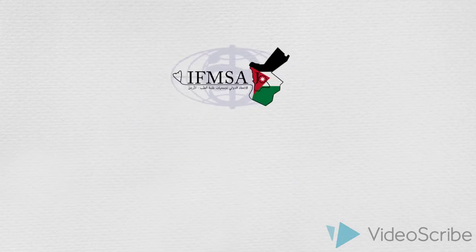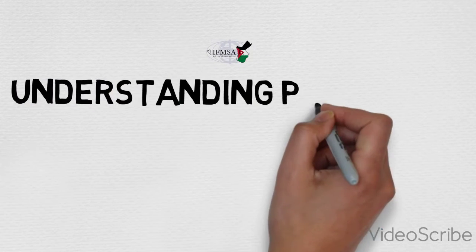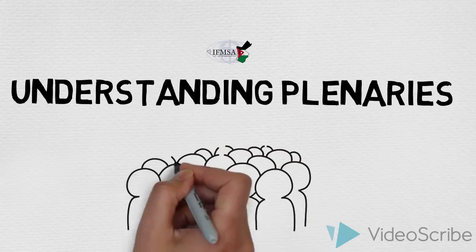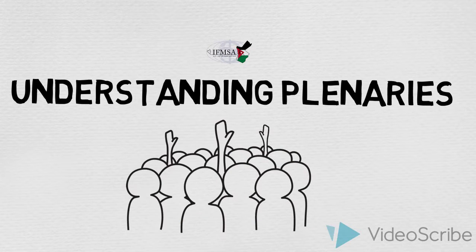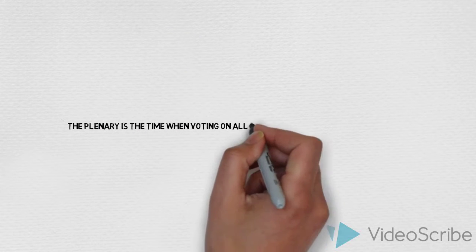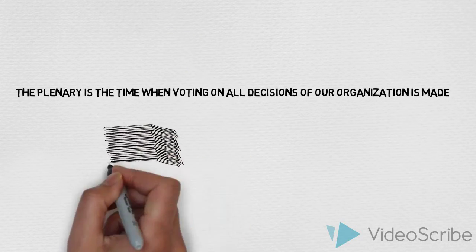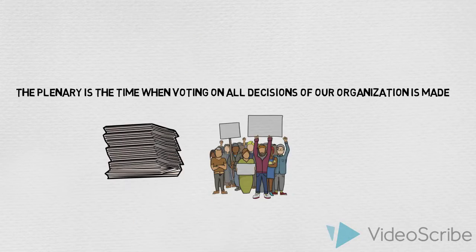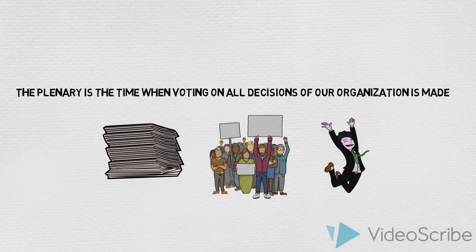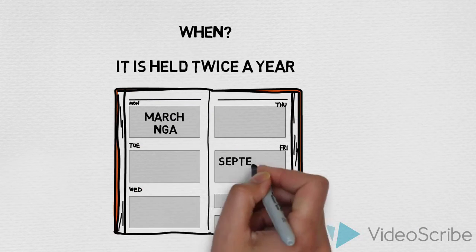Hello, welcome to IFMSA. By watching this video, you will get everything you need to know about plenaries. The plenary is the time when voting on all decisions of our organization is made. It is held twice a year, in March at GA and in September at GA.